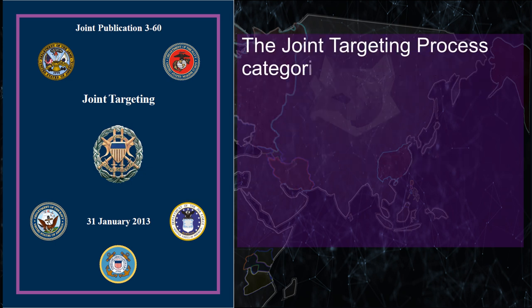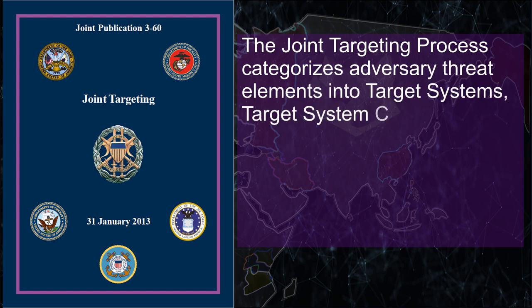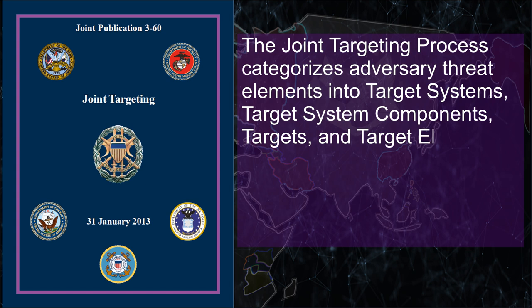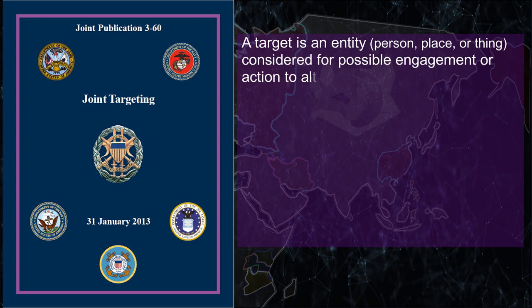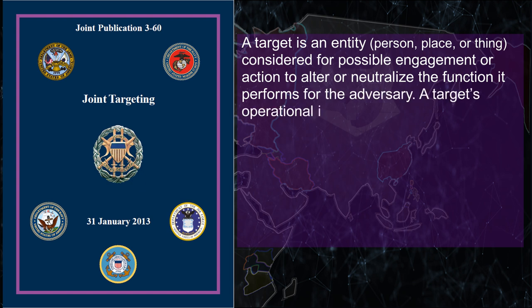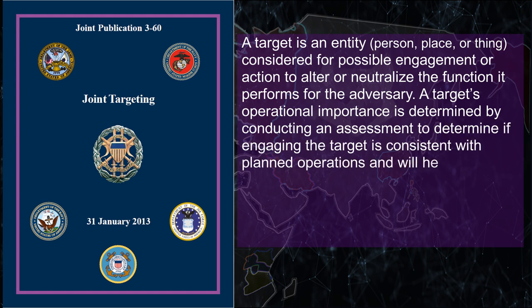The joint targeting process categorizes adversary threat elements into target systems, target system components, targets, and target elements. A target is an entity — a person, place, or thing — considered for possible engagement or action in order to alter or neutralize the function it performs for the adversary. A target's operational importance is determined by conducting an assessment to determine if engaging the target is consistent with planned operations and will help achieve the commander's objectives and end state.